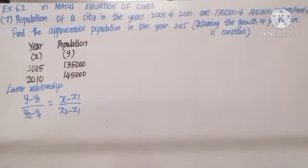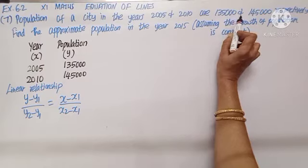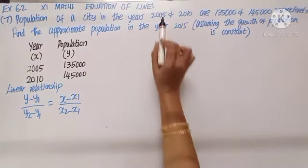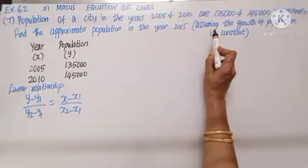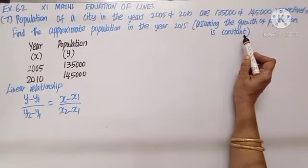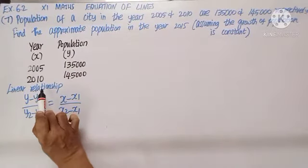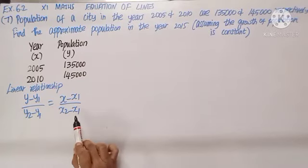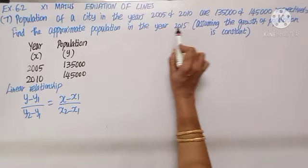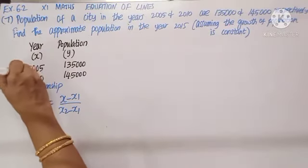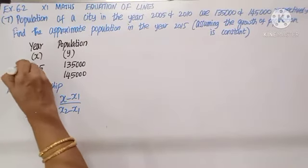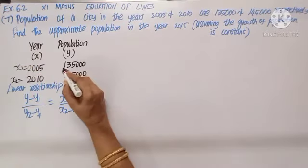Question number seven: the population of a city in 2005 and 2010 are 1,135,000 and 1,145,000 respectively. Take years as X and population as Y. Given that population growth is constant, we can assume a linear relationship. Call 2005 as X1, 2010 as X2, 1,135,000 as Y1, and 1,145,000 as Y2. Find the approximate population in the year 2015.